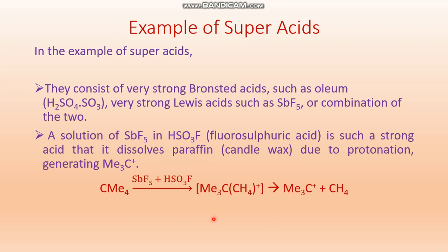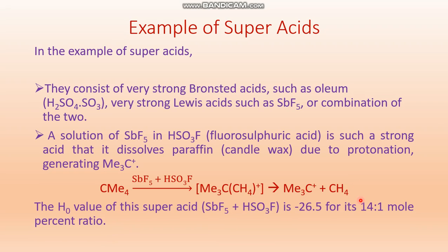It follows this reaction: 2,2-dimethylpropane, or simply neopentane, when it reacts with this superacid composition of SbF5 and HSO3F, it undergoes protonation. This protonated species then forms the Me3C+ ion by releasing methane gas. And its 14-to-1 ratio has the H0 value of minus 26.5 — showing how powerful this acid composition is.